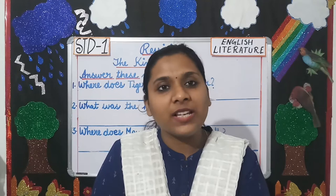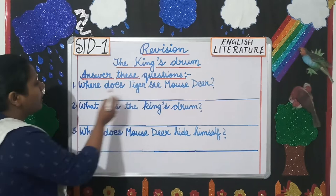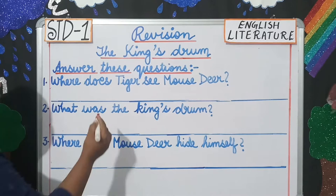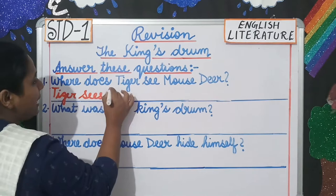Did you all understand, students? Now let us move on to the question answers. Question number one: where does the tiger see the mouse deer? Tiger sees mouse deer by the river. You will write according to the question — 'Tiger sees' — the verb becomes 'sees' because you have 'does' in the question — sees mouse deer by the river.